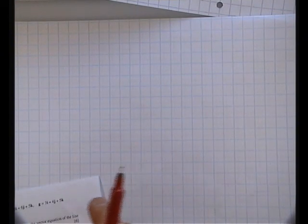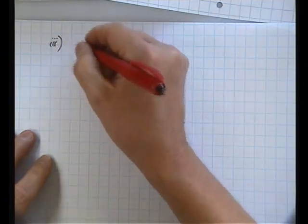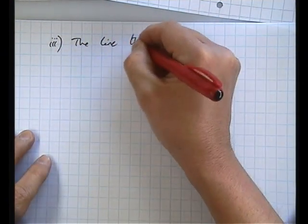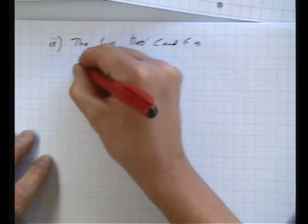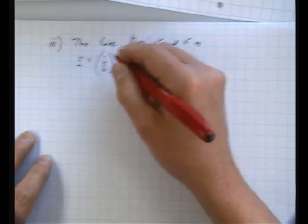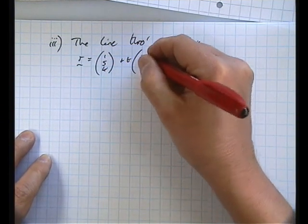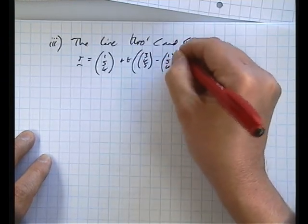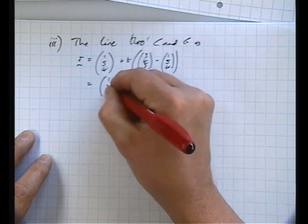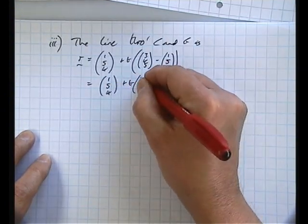And part 3 says, find a position vector to point P on the line through C and G such that CP equals 4/3 CG. Now part 3 here is the line through C and G. So the line through C and G is r equals (1, 5, 4), which is C, plus t lots of (3, 4, 5), that's G, take away C (1, 5, 4), which more simply put is (1, 5, 4) plus t lots of (2, -1, 1). So that's the line through C and G.